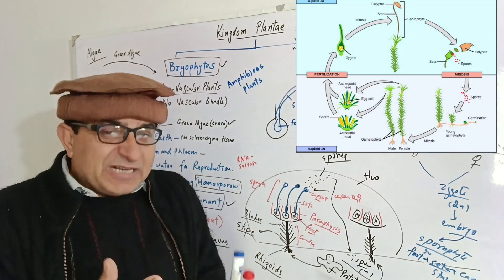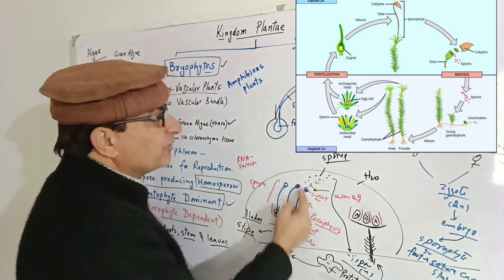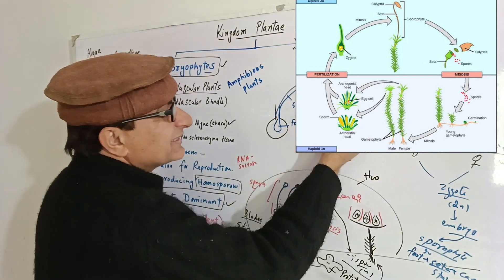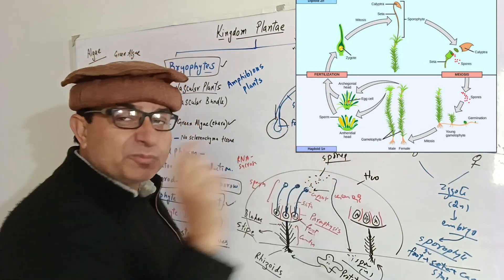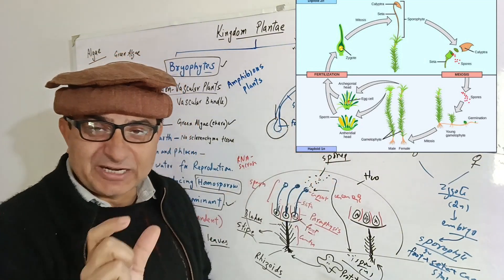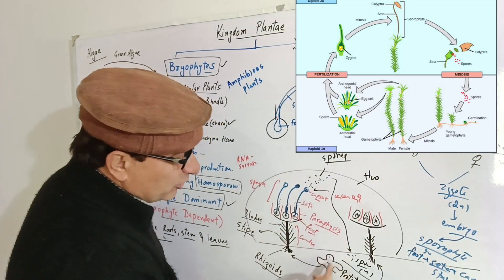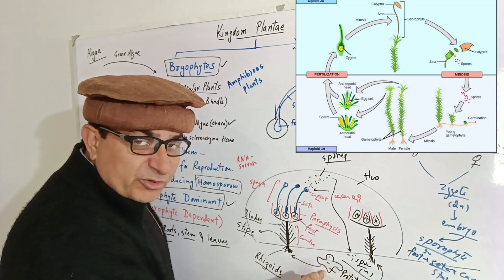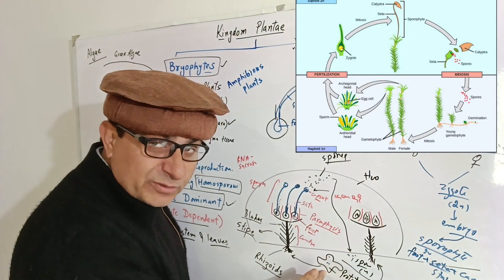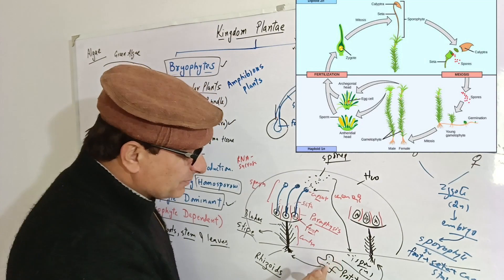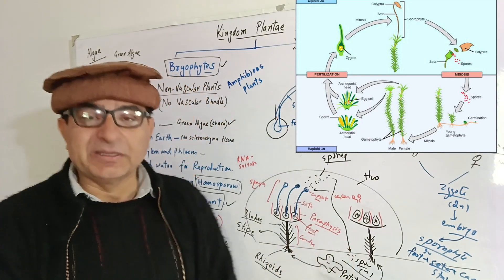After meiosis, spores are produced. They will produce a protonema-like structure. Upon return of suitable conditions, this protonema will again give rise to a new gametophyte, completing the alternation of generations in bryophytes.